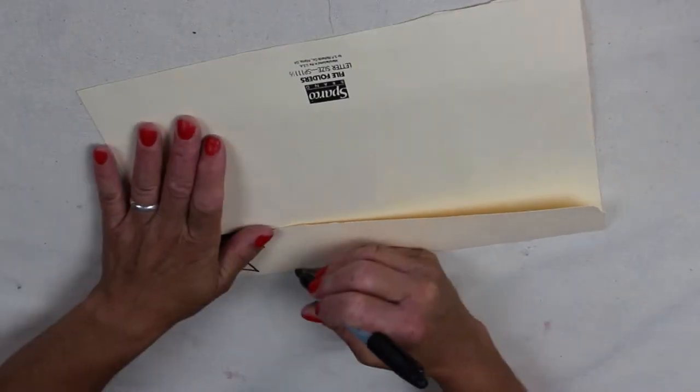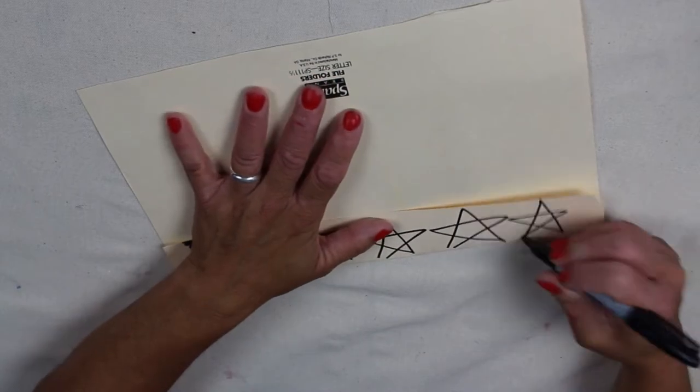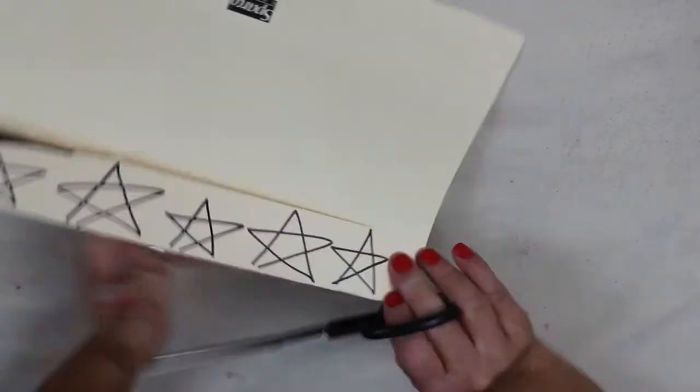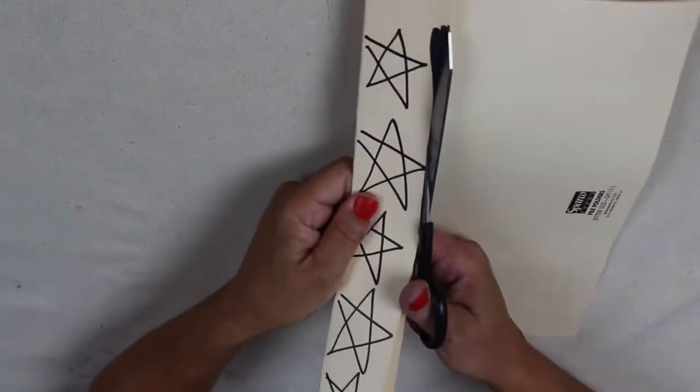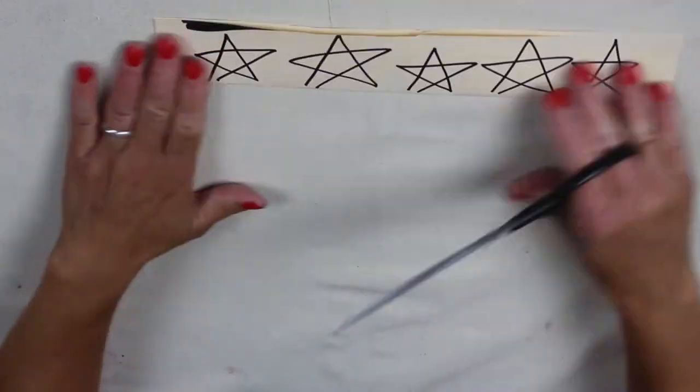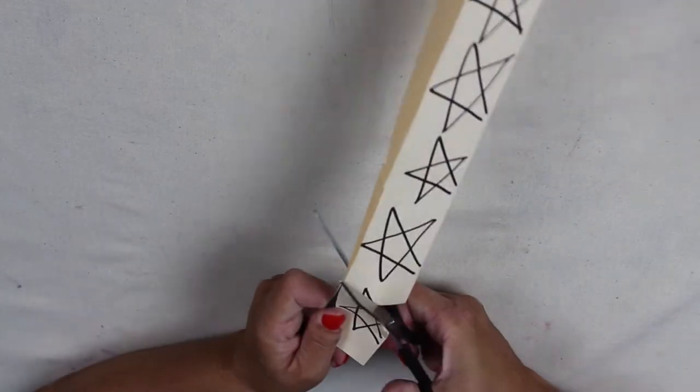We're going to be making a textured pattern on our jelly plate using some paper cutouts. I take the manila folder and I fold it, then I draw some stars and cut them out. I like to do the double fold so I can get double the amount of stars.